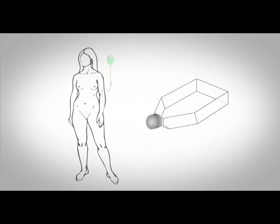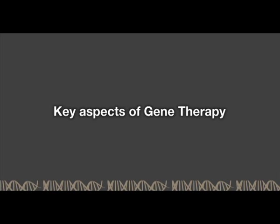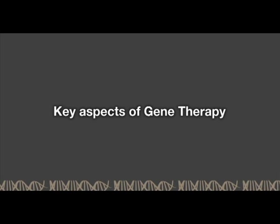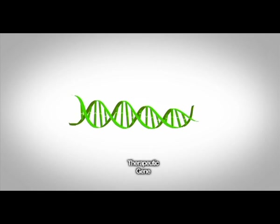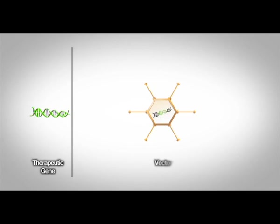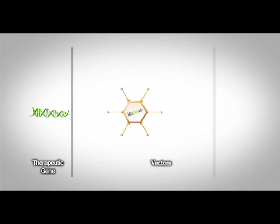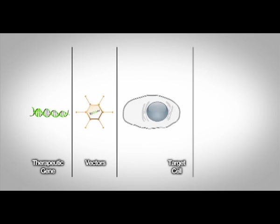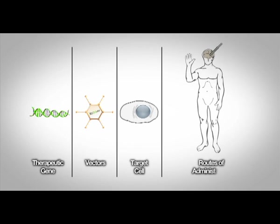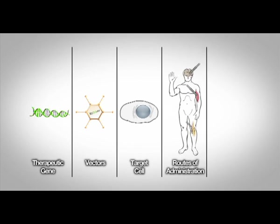Several key aspects must be taken into account when designing a gene therapy approach. First, one must choose the therapeutic gene to treat the disease. This gene must be transported by a vehicle or vector to the target cell that must express the therapeutic protein. However, to reach the target cell, one must consider the route of administration. Finally, it is important to have animal models of human diseases in which to test the gene therapy approach.